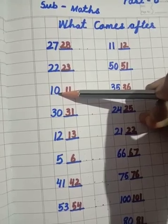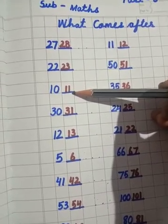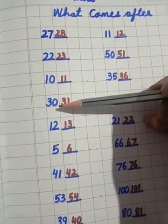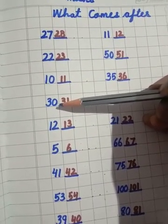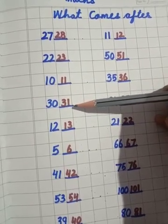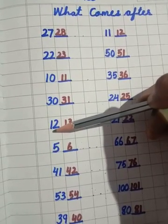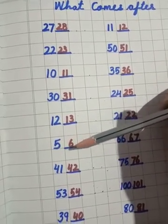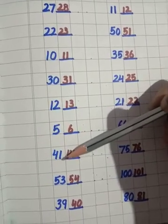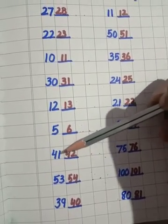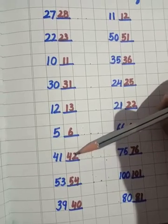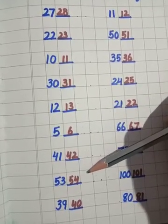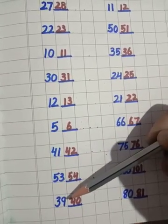Ten comes after eleven. Ten ke baad kaunsa number aata hai? Eleven. Twelve. Thirteen. Five, six. Forty-one comes after. Forty-one ke baad kaunsa number aata hai? Forty-two. Fifty-three, fifty-four. Thirty-nine, forty.